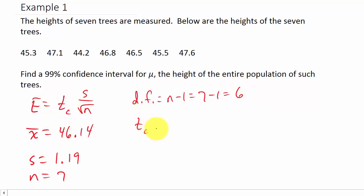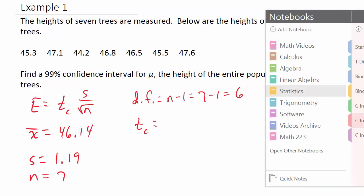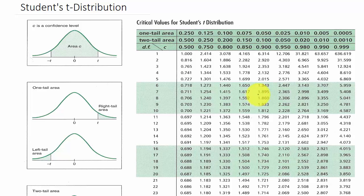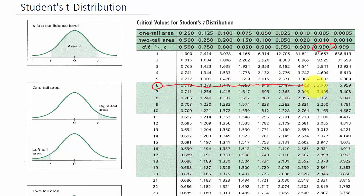Now let's find T-sub-C. We're looking for a 99% confidence interval, so we go to the Student's t-distribution table with degrees of freedom equal to 6. In the table there is a C column for the confidence level. I find 99% across and degrees of freedom 6 down, and where they meet the value is 3.707. That is my T-sub-C.